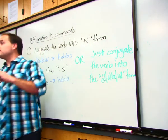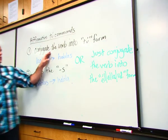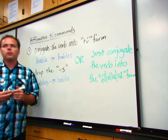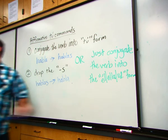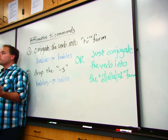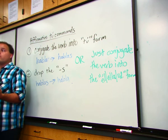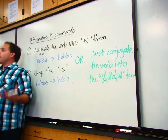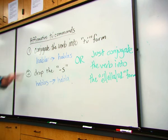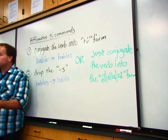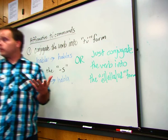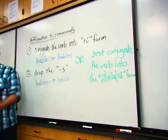Why couldn't we just drop the R from hablar to get habla? Because if it's a stem-changing verb, that wouldn't work — it needs a stem change. So it's easier to conjugate, because you get the conjugation and you get your stem change. We say the tú form because if a verb has an irregular yo form, just dropping the R wouldn't work either. So the tú form is the easiest approach.